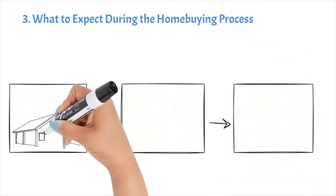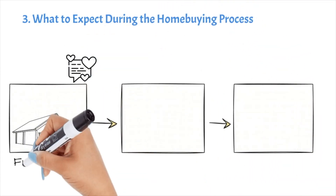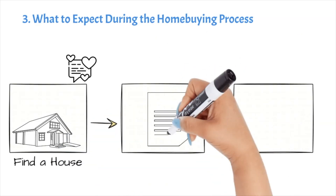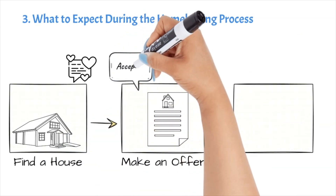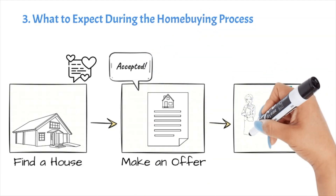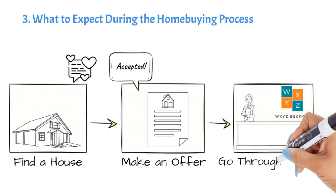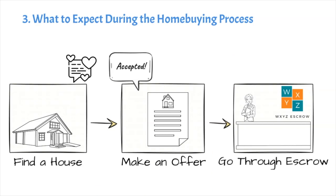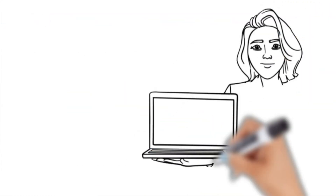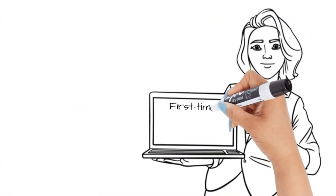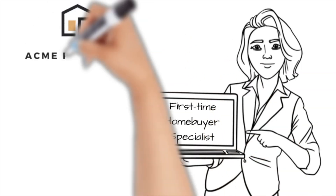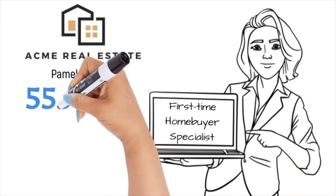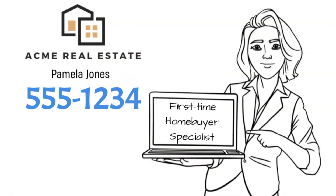Finally, you need to know what to expect during the home buying process. The first step is finding a home that you want to buy. Once you've found a home, you'll need to make an offer and negotiate with the seller. If your offer is accepted, then you'll go through the escrow process. As one of the most experienced real estate agents in Los Angeles, I can help you through every step of the home buying process. If you're ready to buy your first home, then please give me a call at 555-1234. I look forward to hearing from you.